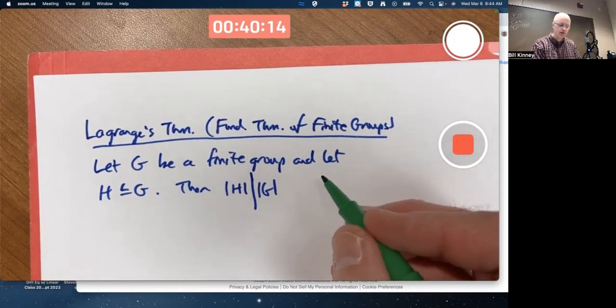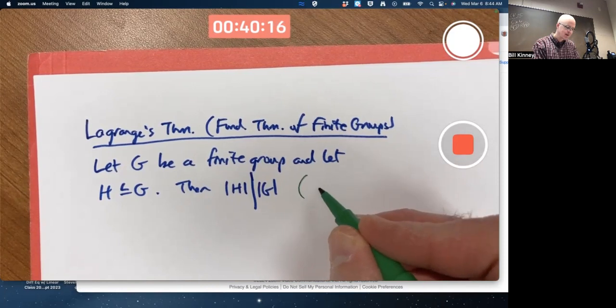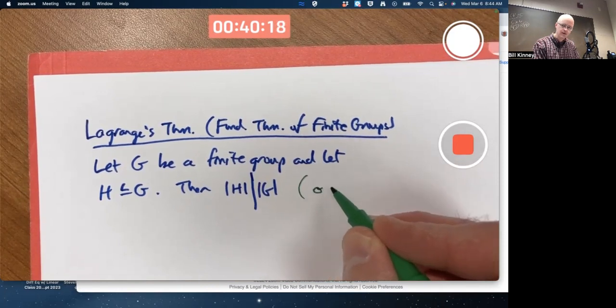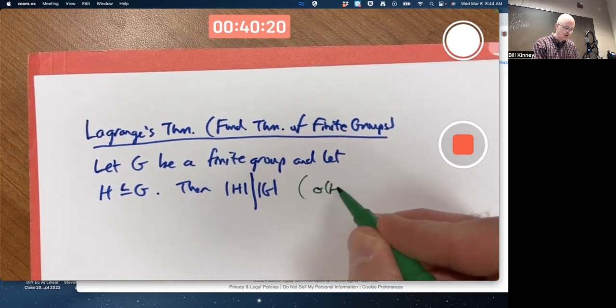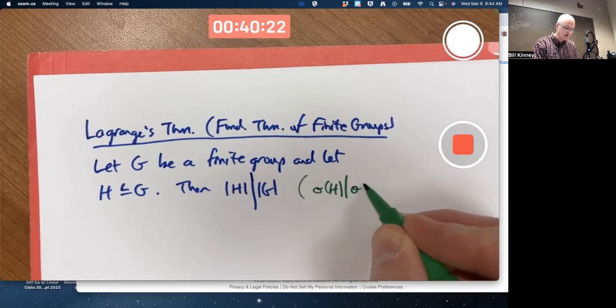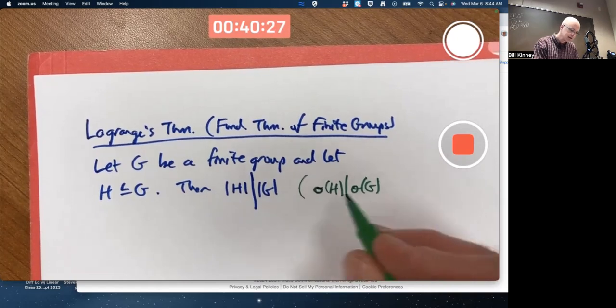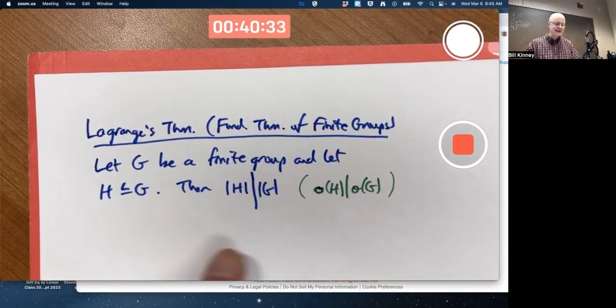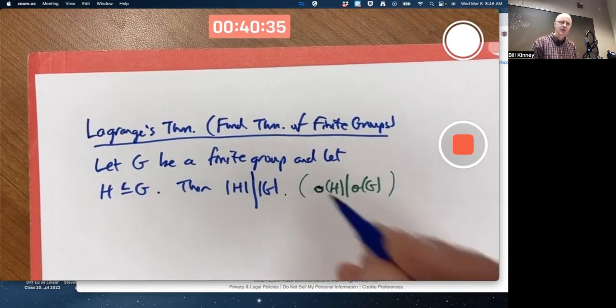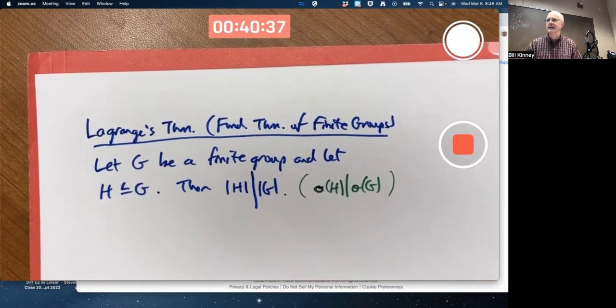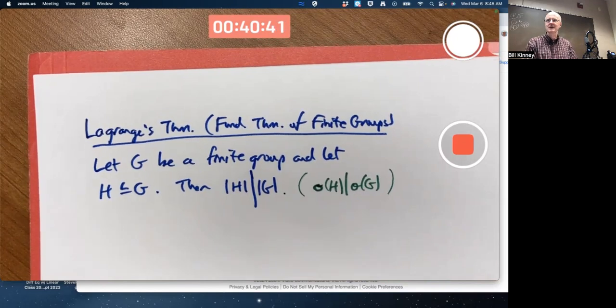In other textbooks, they use O for order, like a little O. Little O of H divides little O of G. That's not a zero, that's an O, cursive. Says a little bit more than that. There's a second sentence related to something called the idea of a coset. But at the moment, since we haven't talked about cosets, this is good enough for us.